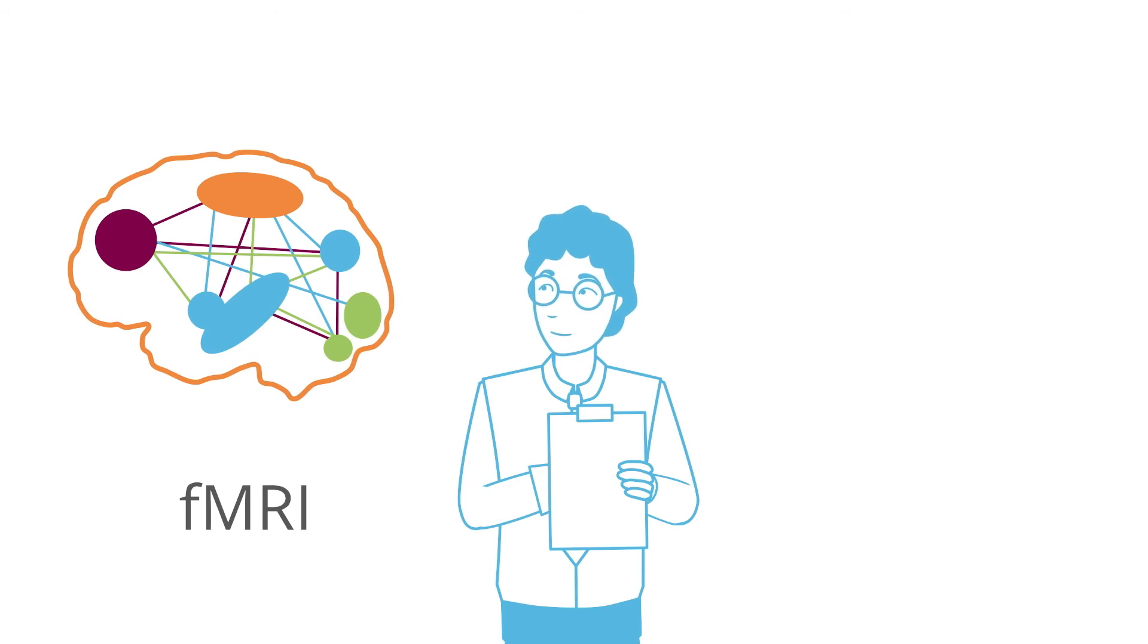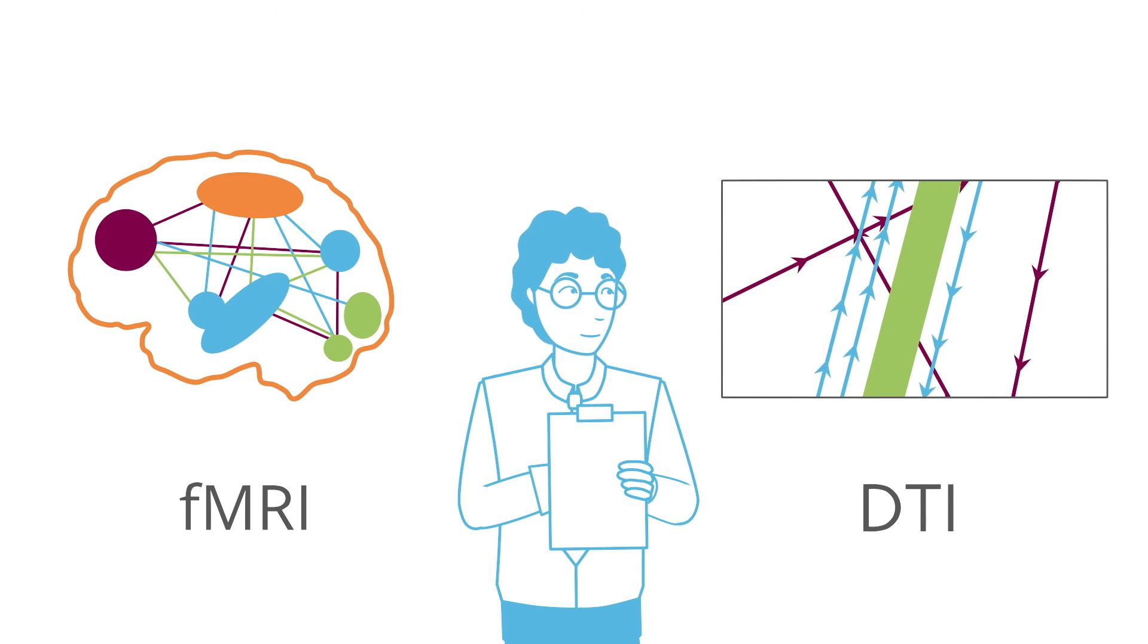With the fMRI then, the researchers can see which areas of the brain are active during specific learning processes. Thanks to the DTI, they can see how these areas connect within a web of fibers, and how its strength develops through learning.